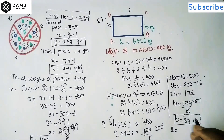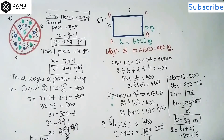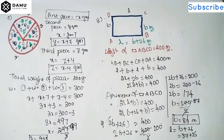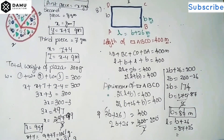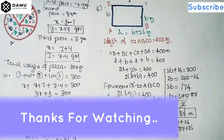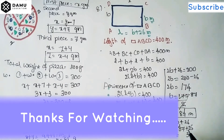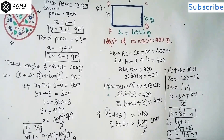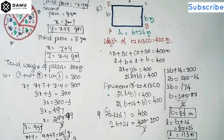Then length l equals b plus 26, that is 87 plus 26. Adding: 7 plus 6 is 13, carry 1; 8 plus 2 is 10, plus 1 is 11. So l equals 113 meters. The length of the field is 113 meters.